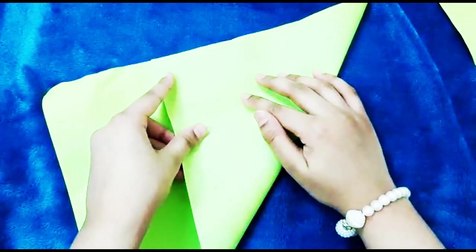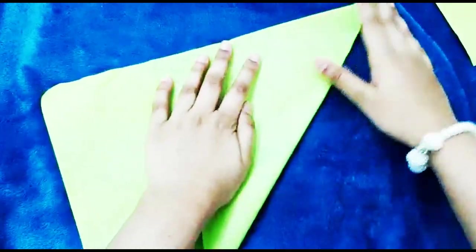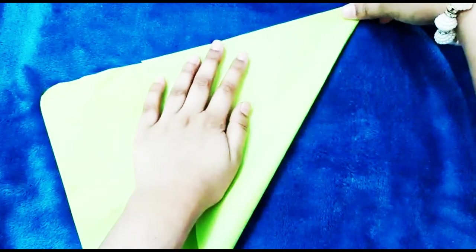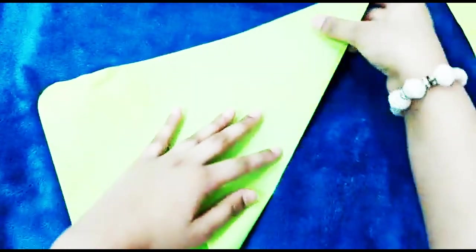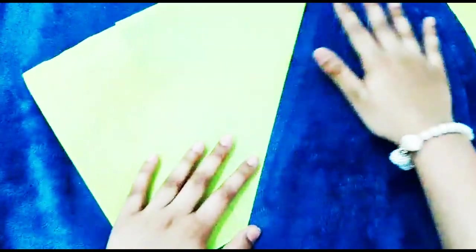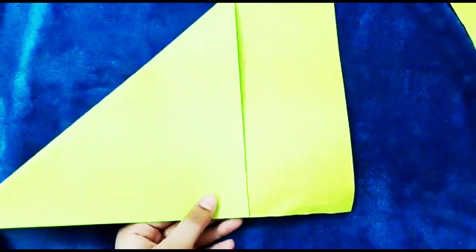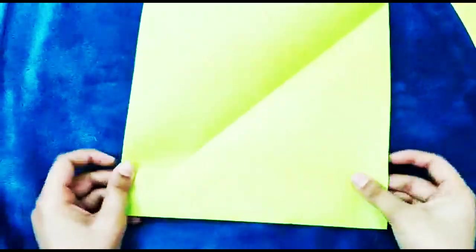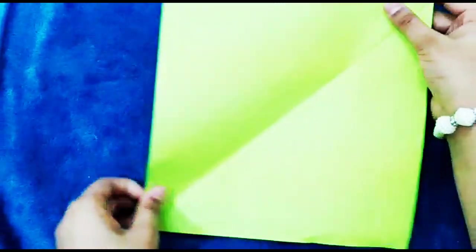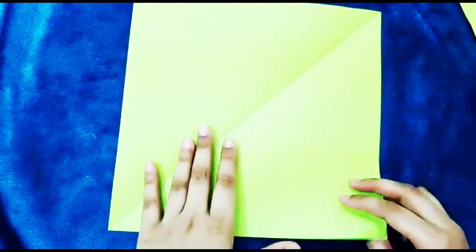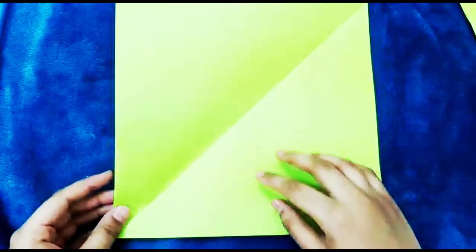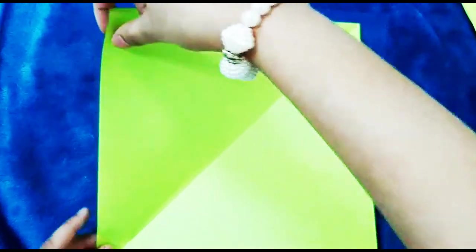Again, repeat making a square as I told you. You have to make it like this, and then you can just cut this excess part out. As you can see, I've cut it, and then you can form a square. I'm folding it. Now you're gonna fold this corner to this corner like this, so you form a triangle.